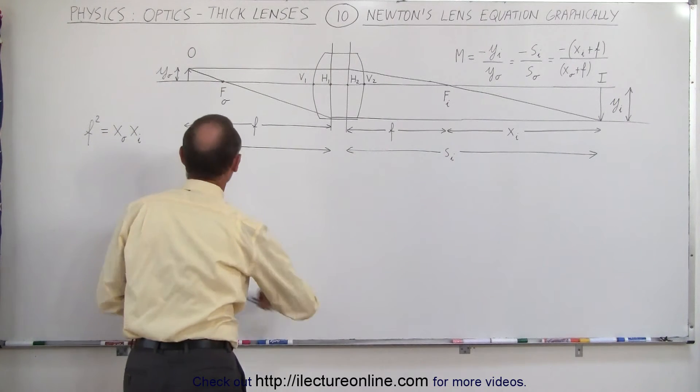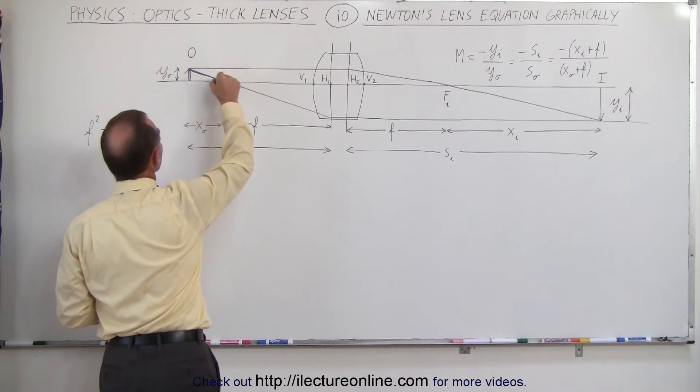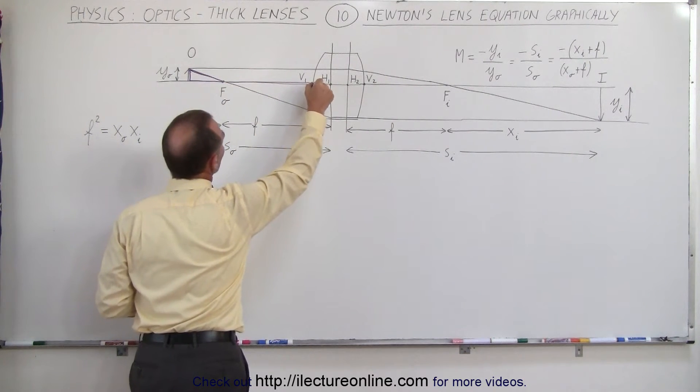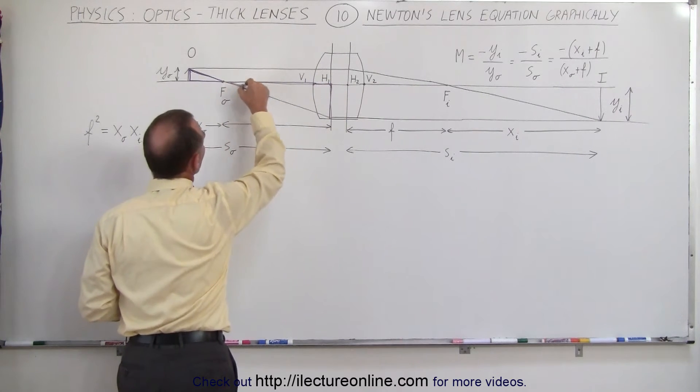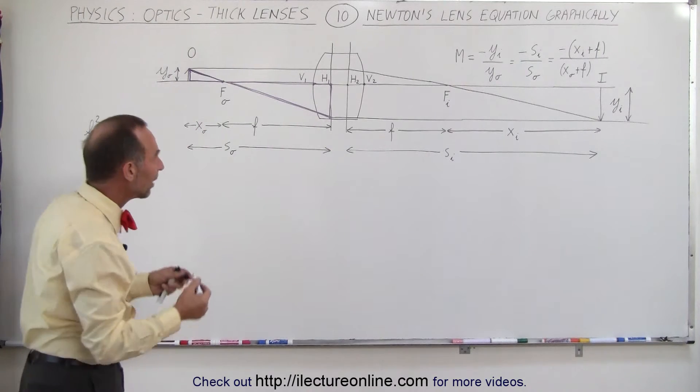Notice, and I'm going to use a different color, that this triangle here and this triangle here, these triangles are similar to one another. They're similar triangles. That means that the ratios of the size and the angles are the same.